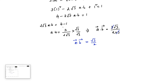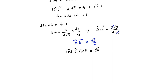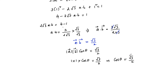By the definition of the dot product, a·b = |a||b|cos θ = √3/2. Since a and b are unit vectors, |a| = 1 and |b| = 1, so cos θ = √3/2. Since cos θ is positive, this is an acute angle. cos 30° = √3/2, so θ = π/6, that is 30 degrees. Therefore, the angle between the two vectors a and b is π/6 (30°).